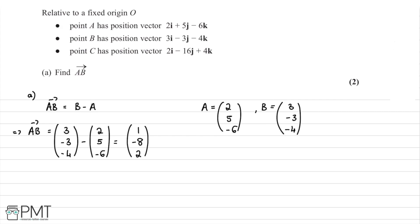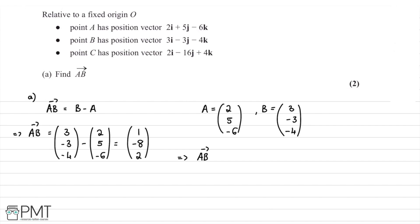Therefore, we can conclude that vector AB, written back in the form they give us in the question, is equal to i minus 8j plus 2k. That's us completing this question. It was worth 2 marks. We receive our first mark for knowing how to do the calculation and substituting in the vectors correctly, and then receive the second mark for having the correct final answer.